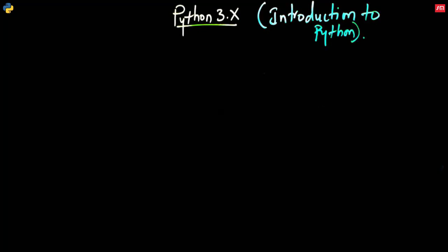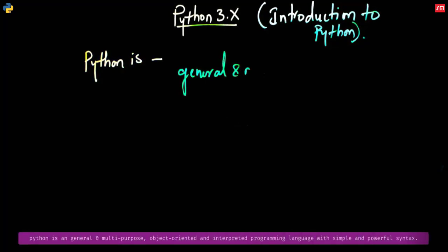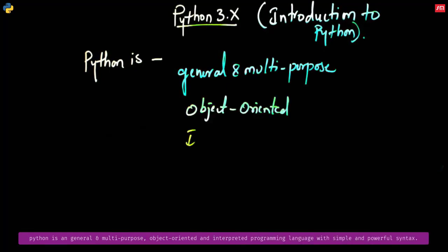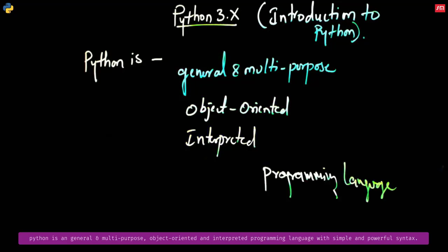So, what is Python? Python is a general and multipurpose, object-oriented and interpreted programming language. This is how I would define the Python programming language, and this is what I would recommend if someone asks you what Python is.